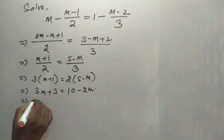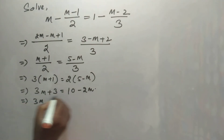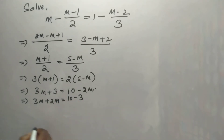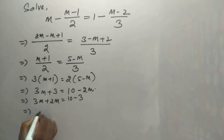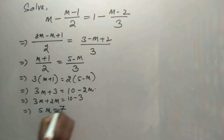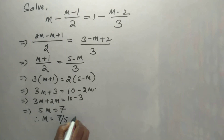Then it is 3m plus 2m is equal to 10 minus 3. Now it is 5m is equal to 7, therefore m is equal to 7 by 5.